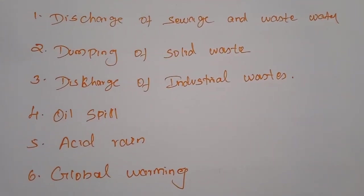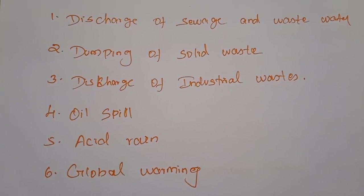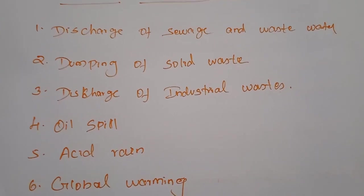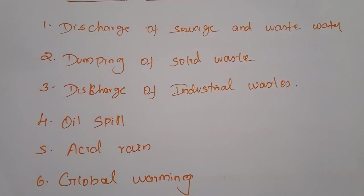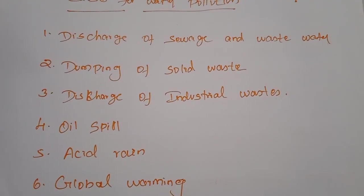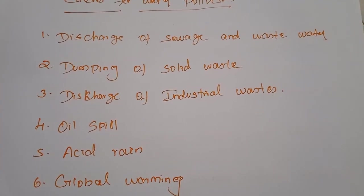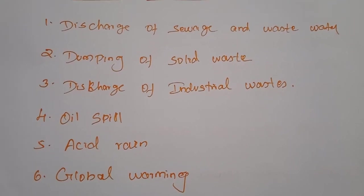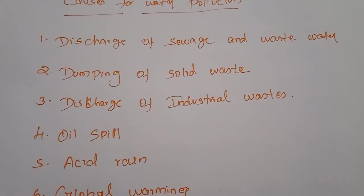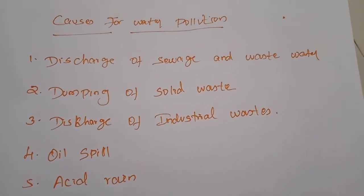Next, discharge of industrial waste. Industrial waste contains pollutants like asbestos, lead, mercury, grease, oil, and petrochemicals, which are extremely harmful to both people and the environment. Wherever industries are located, much of the solid and industrial waste is dumped into rivers and lakes, which will harmfully affect human bodies and our environment.